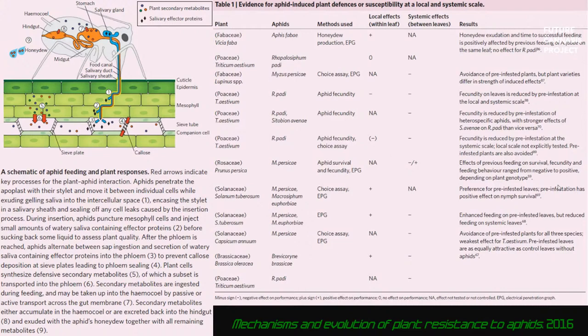People often ask how aphids survive despite the secondary metabolites and toxins plants produce. The answer is that aphids are very effective at suppressing the creation of these compounds in the first place. Some aphids even sequester plant toxins in their bodies to become toxic to their own predators, or they simply excrete toxins in their honeydew rapidly enough to avoid toxic effects themselves.